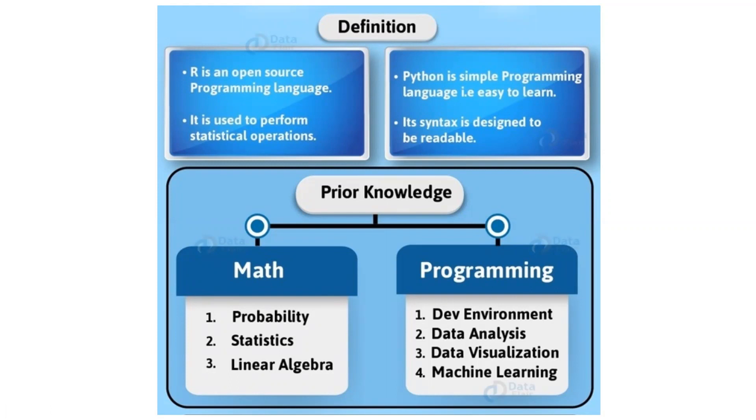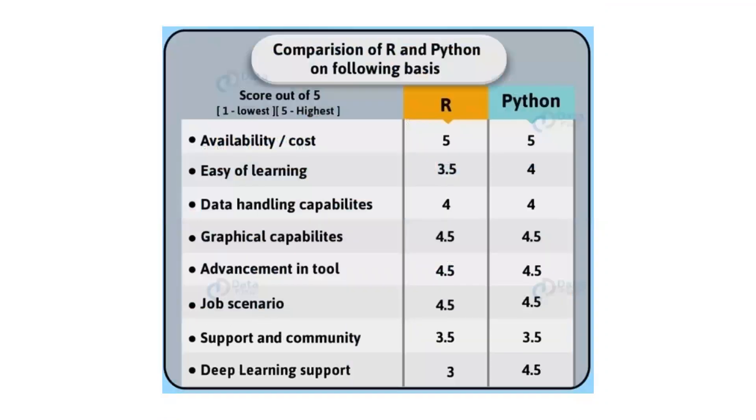In a nutshell, Python is better for data manipulation and repeated tasks, while R is good for ad hoc analysis and exploring datasets. Comparing them: both score 5 on availability, R scores 3.5 on ease of learning while Python scores 4. Python is more accessible as a general programming language.